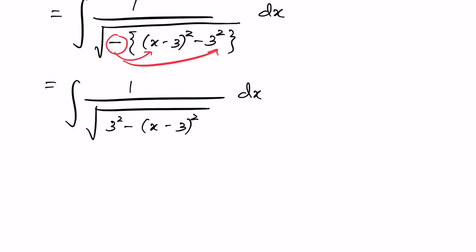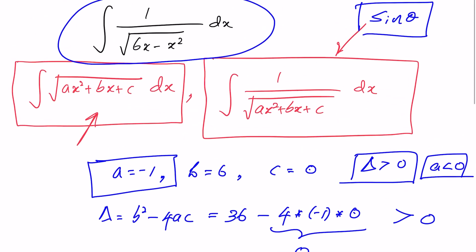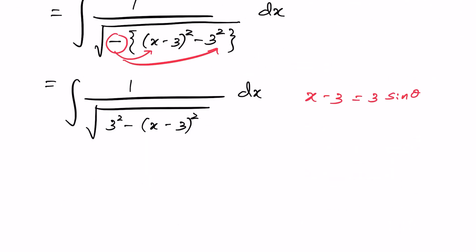Now we know what substitution we need — a sin θ substitution. We set x − 3 = 3 sin θ, where 3 is the square root of the constant term 3². Differentiating both sides gives dx = 3 cos θ dθ.